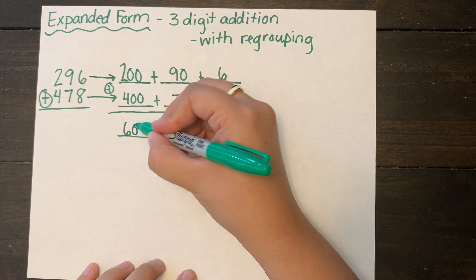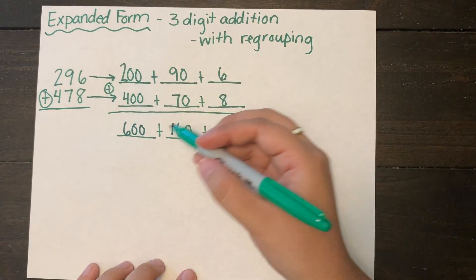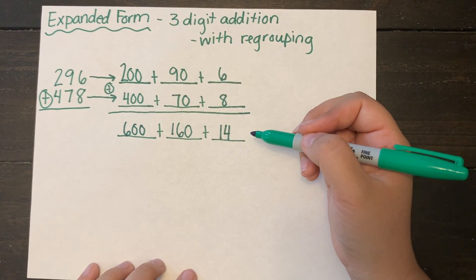And of course 200 plus 400 equals 600. You can skip count by hundreds to find that answer.